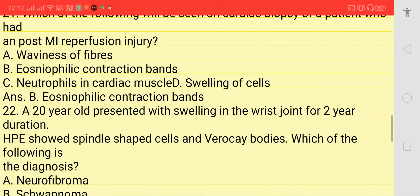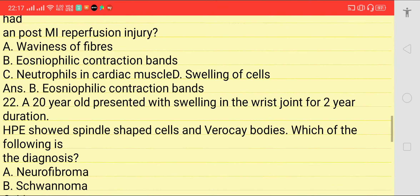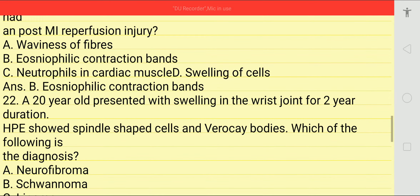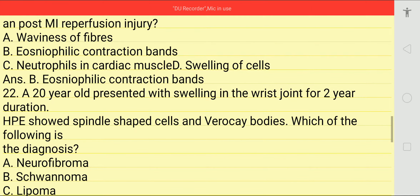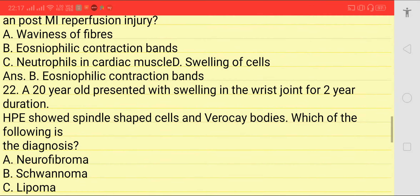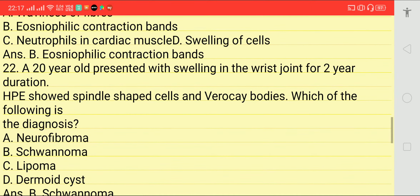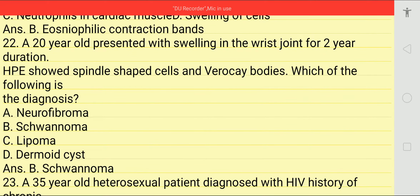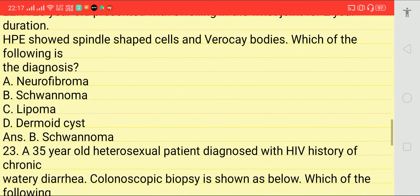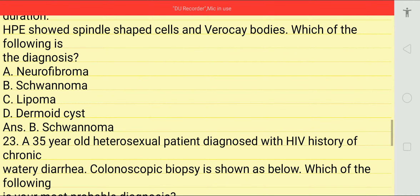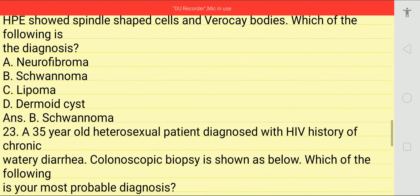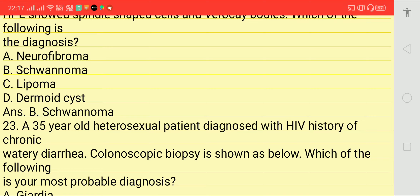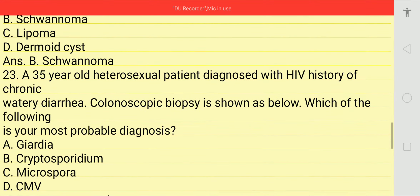Other options were: heaviness of fiber, neutrophils in cardiac muscle, and swelling of cell. Answer is B. Next: a 20-year-old presented with swelling in the wrist joint for two years. Biopsy showed spindle-shaped cells and Verocay bodies. Which of the following is the diagnosis? Answer is schwannoma, option B.